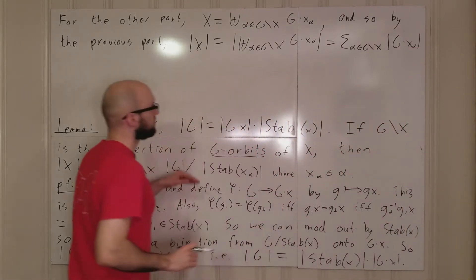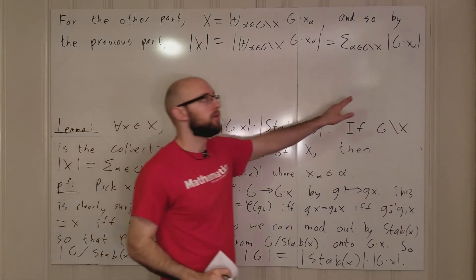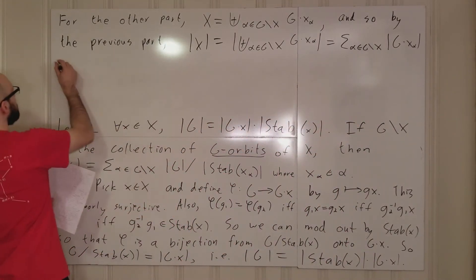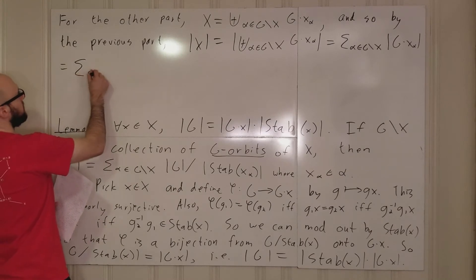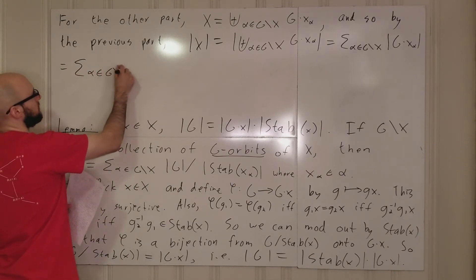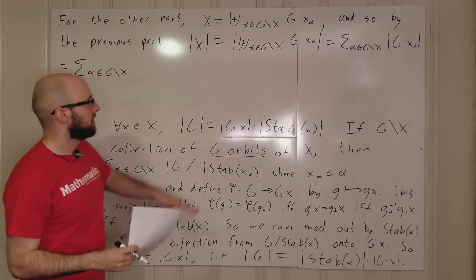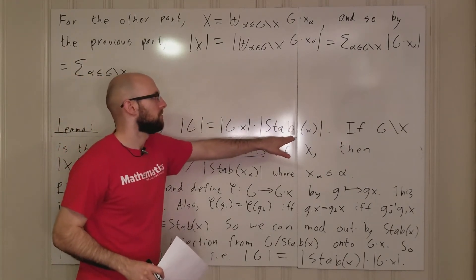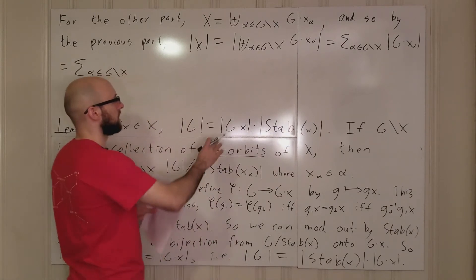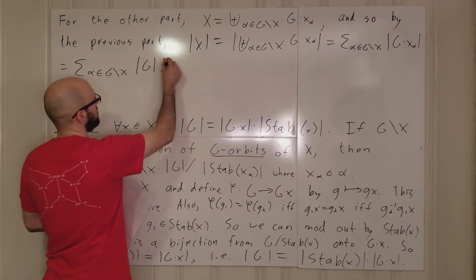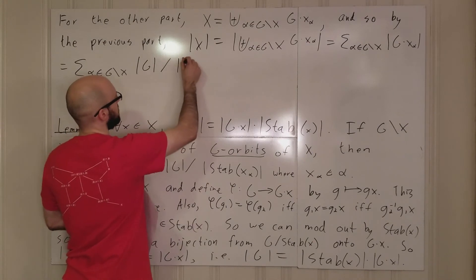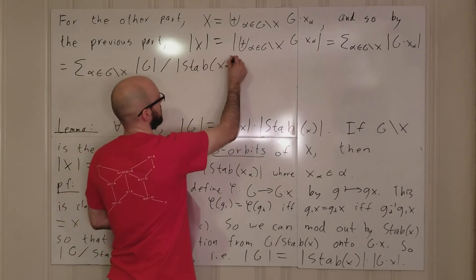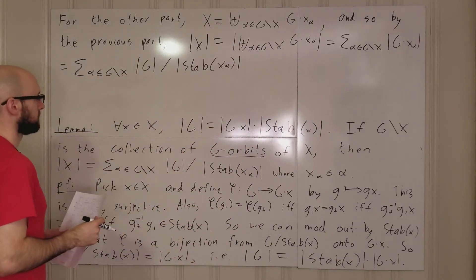But now we use the previous part because we know another way of writing this orbit. We can write that orbit, we keep the alpha, this thing here. If g equals the orbit of x times the stabilizer of x, we can divide the stabilizer to the other side. And so this is going to be g divided by the stabilizer of this particular chosen element.